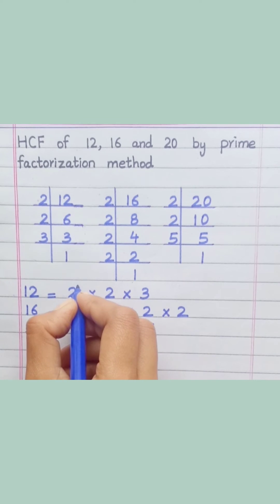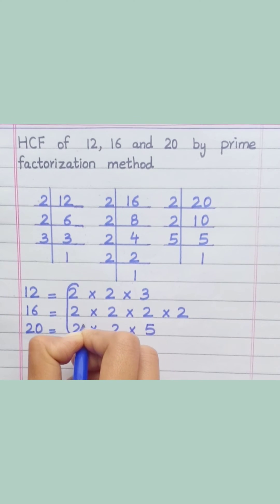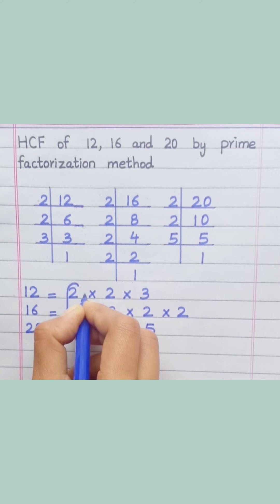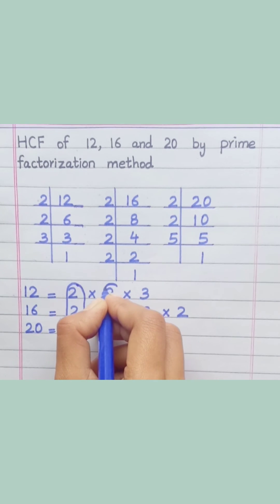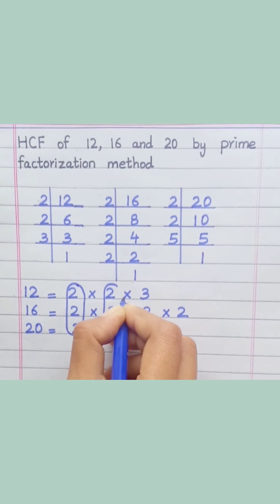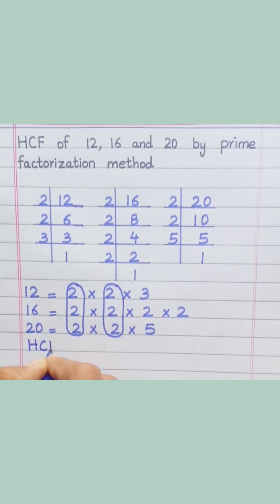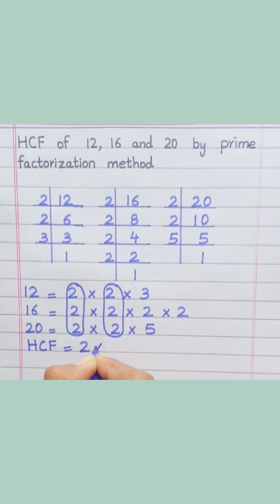Loop the factors that are common to all of the given numbers. HCF equals 2 multiply 2 equals 4.